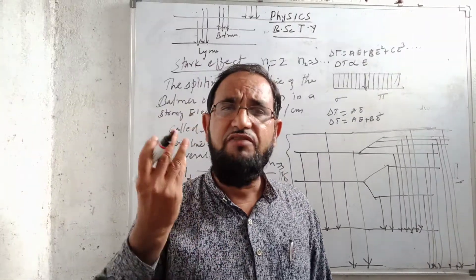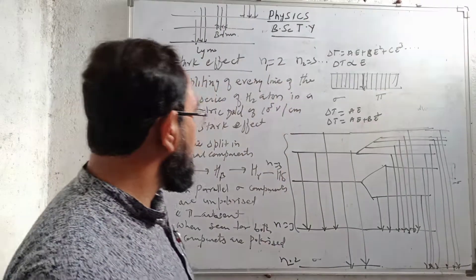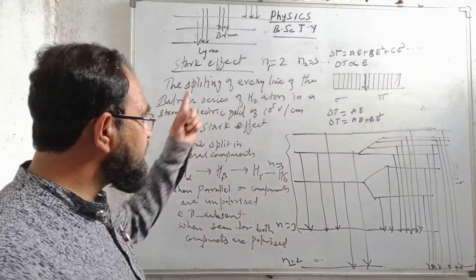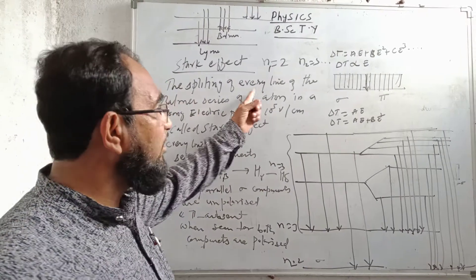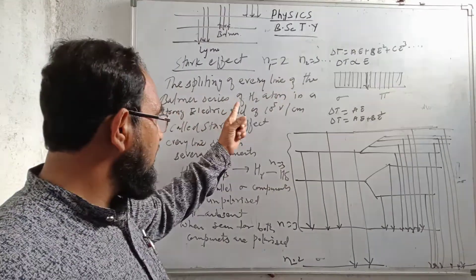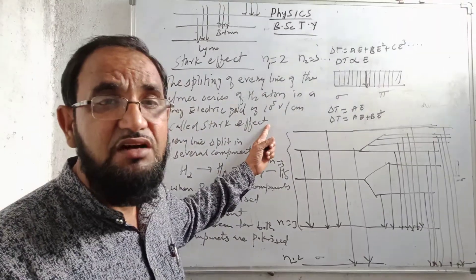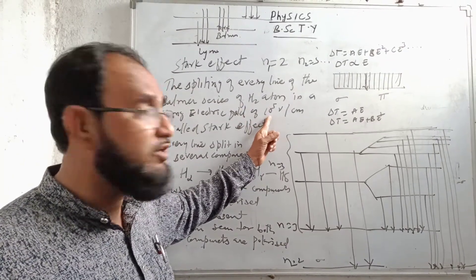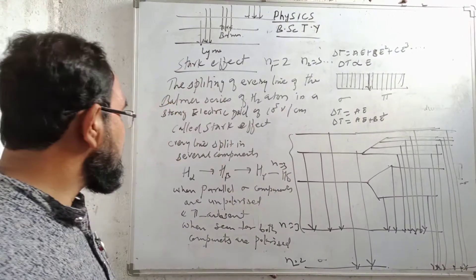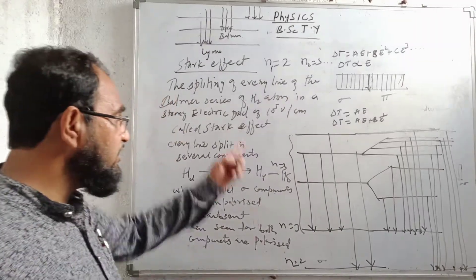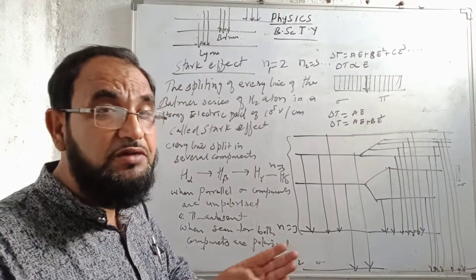In the Balmer series we have the H-alpha line, H-beta line, H-gamma line, H-delta line, and so on. The Stark effect states that the splitting of every line of the Balmer series of the hydrogen atom in a strong electric field is called the Stark effect. The electric field is of the order of 10⁵ volt per centimeter — a very high electric field.